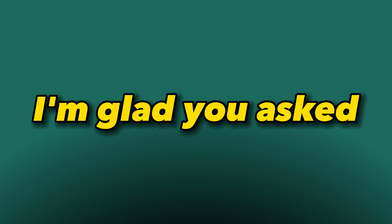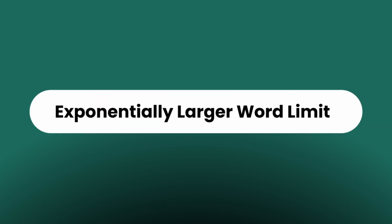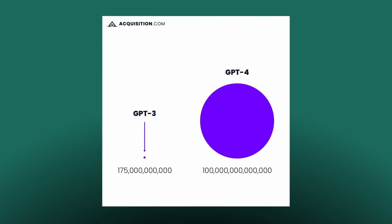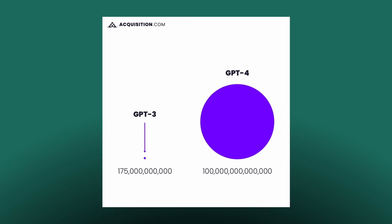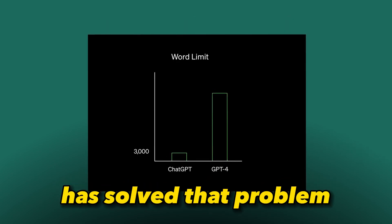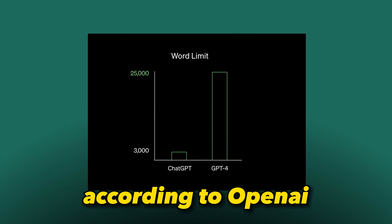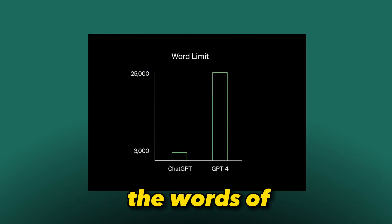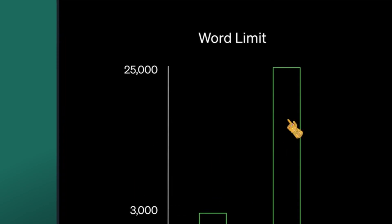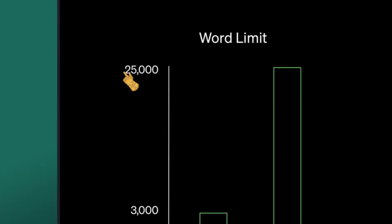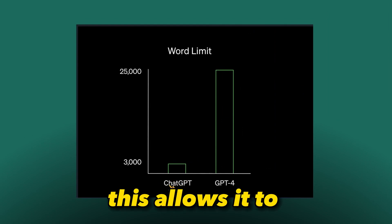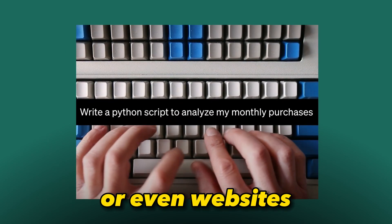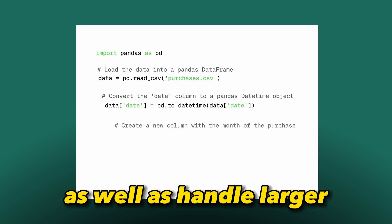Exponentially larger word limit: while everyone loved GPT-3 and GPT-3.5, people wished it could recognize longer inputs. GPT-4 has solved that problem. According to OpenAI, it can process 8 times the words of the previous model — up to 25,000 words rather than the 3,000-word limit of GPT-3. This allows it to summarize entire blog posts or even websites in a couple of minutes, as well as handle larger text inputs.